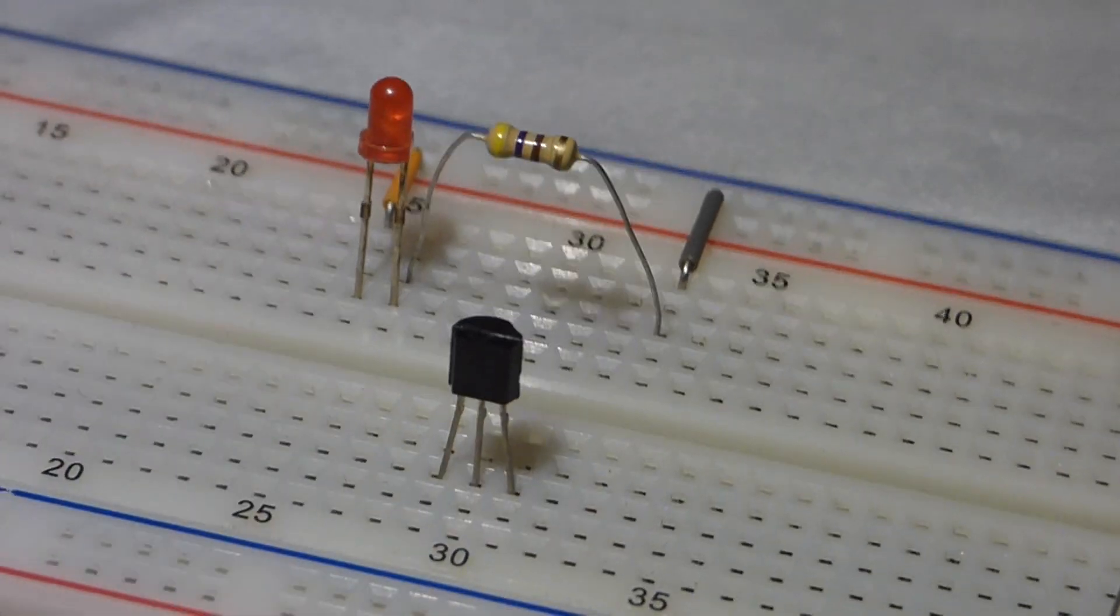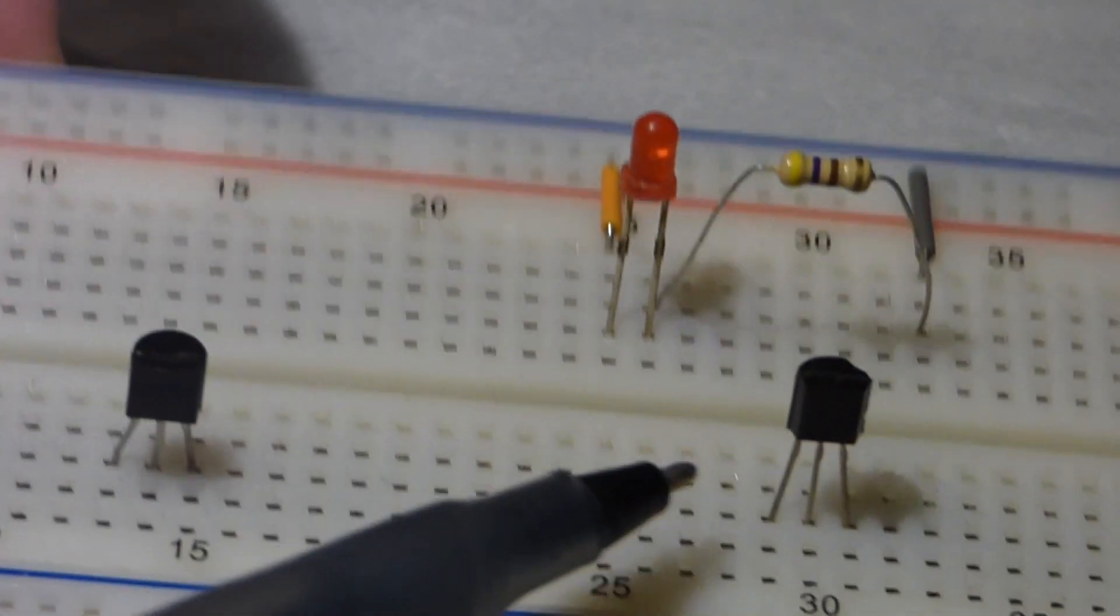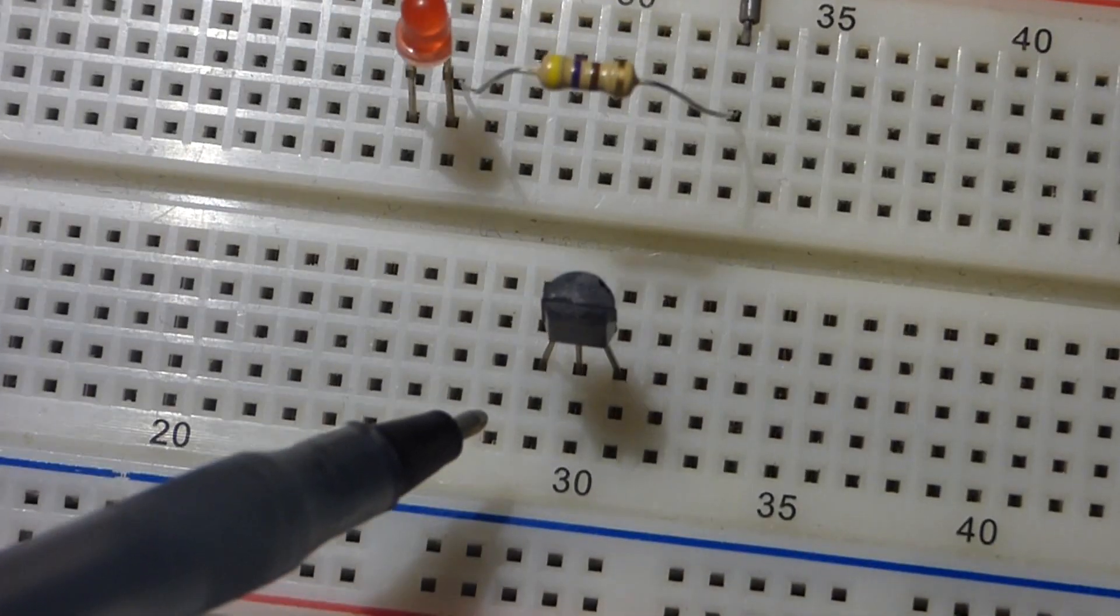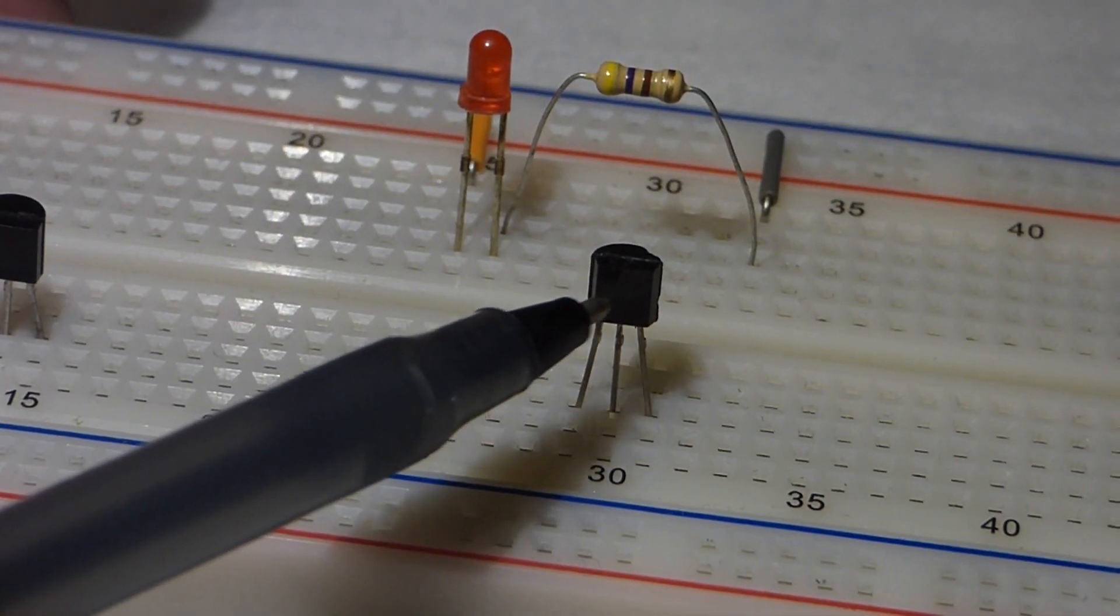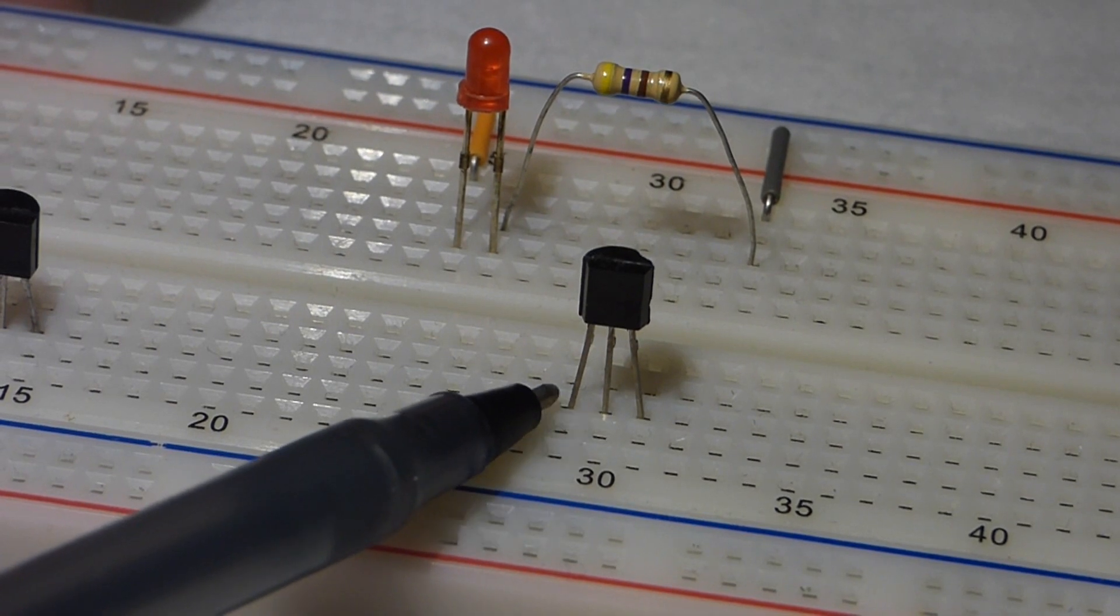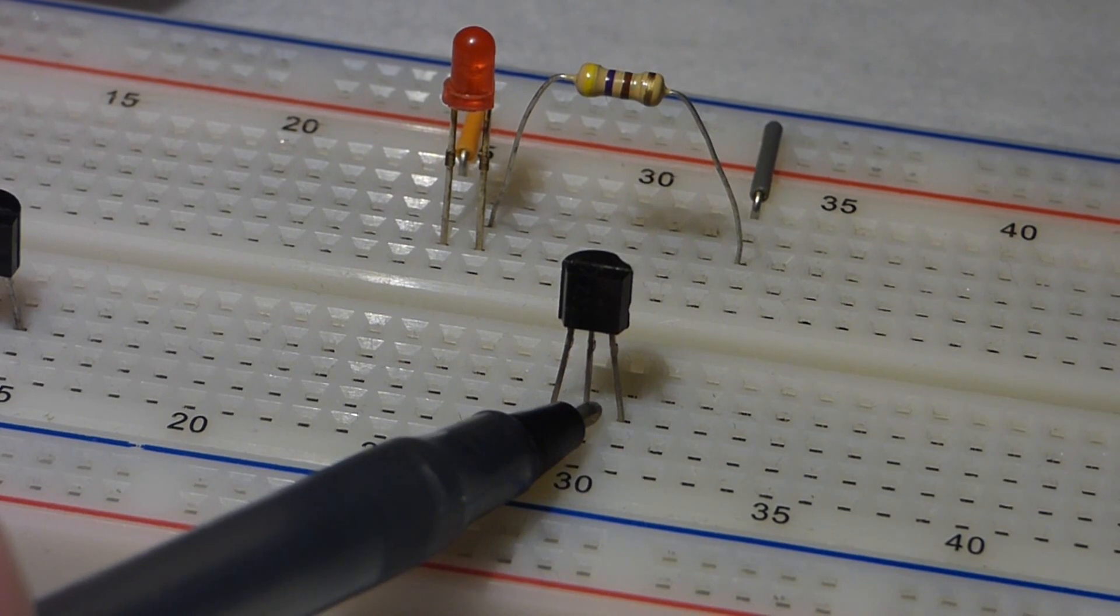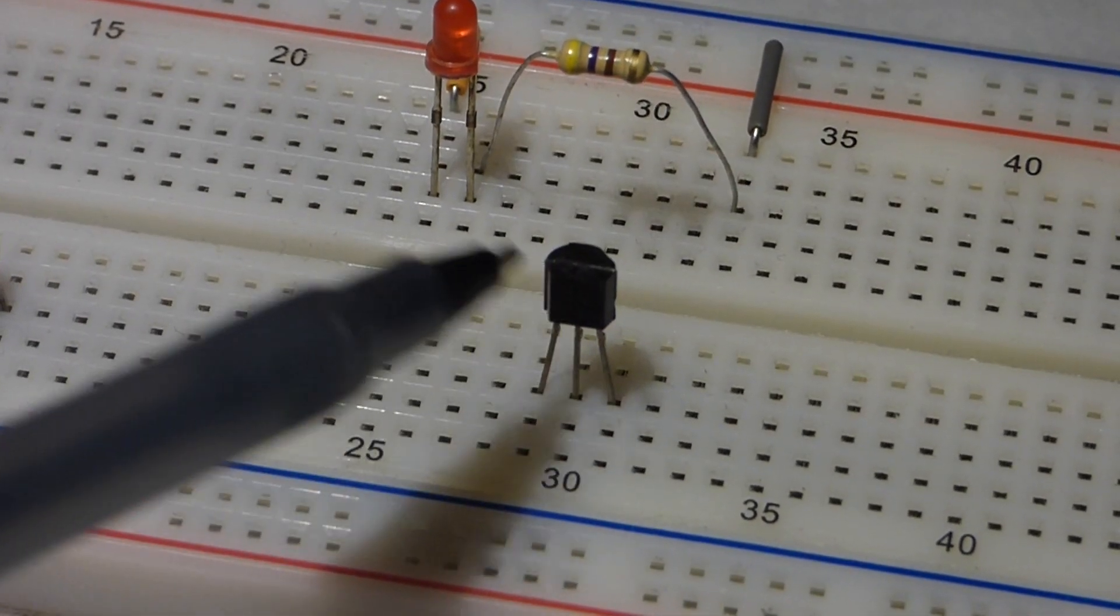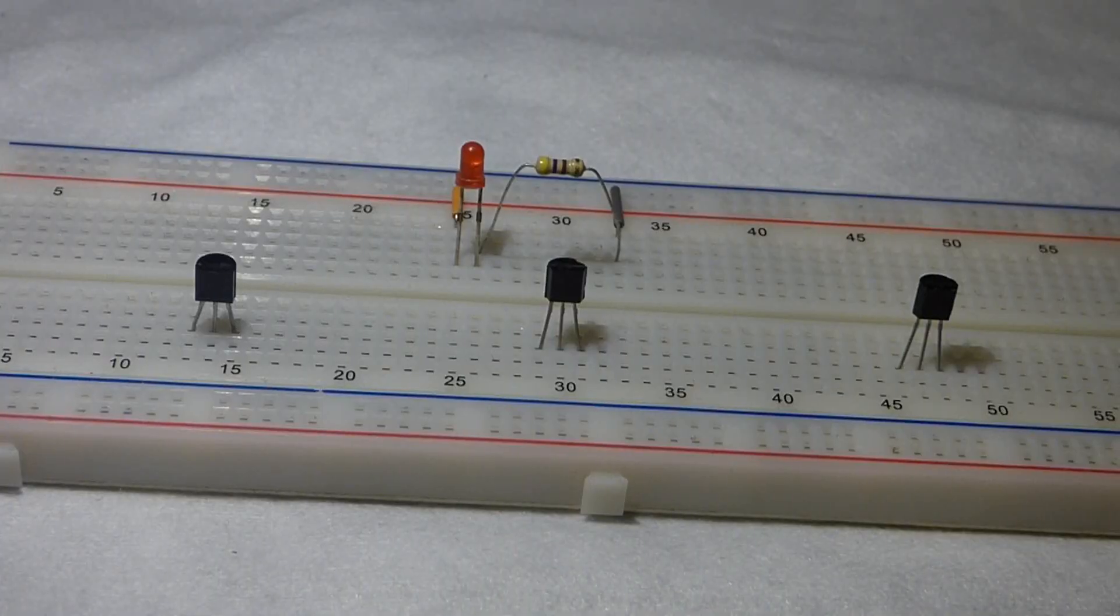Where it gets a little more complicated with the transistor. All of these 2N type transistors, all 2N type transistors that I know of, when you're looking at the flat edge, the left pin is called the emitter. The middle pin is called the base. And then the right pin is called the collector. That's if you're looking at the flat side.